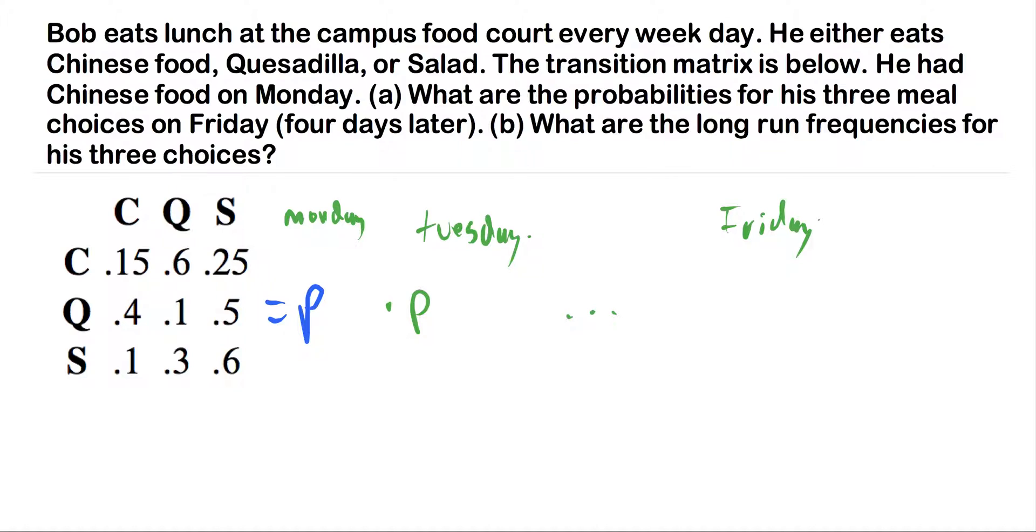What we're looking at here is, for Tuesday, this would be P squared. Now for Friday, we've even been told here it's four days later, so what we want is P to the fourth. This is going to give us all of our choices given that we ate Chinese food on Monday.